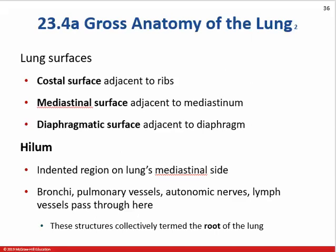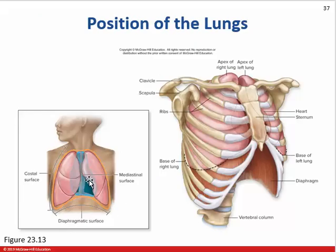Looking at each lung: there's the costal surface against the ribs, the mediastinal surface facing the mediastinum, and the diaphragmatic surface at the bottom. On the medial side is an indentation called the hilum, through which the bronchi, nerves, lymphatic vessels, and pulmonary arteries and veins all pass. The lungs fill the whole thorax from the diaphragm upward — the apex of the lung is all the way up behind your collarbones.